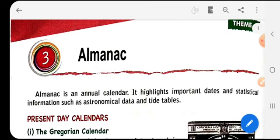Who made the calendars? Now let's see what is an almanac. Almanac is an annual calendar. It highlights important dates and statistical information such as astronomical data and tide tables. So this is an annual calendar which is known as almanac.